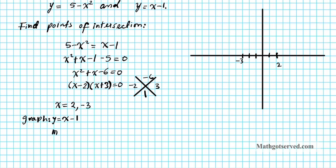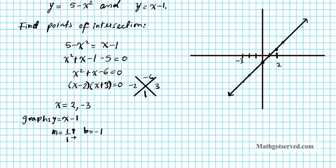The slope is 1 over 1, so we rise 1 and run 1 starting from the y-intercept of negative 1. Starting from negative 1, we rise 1 and run 1 to plot additional points. So there goes the linear function. We'll label this the blue function: y equals x minus 1.